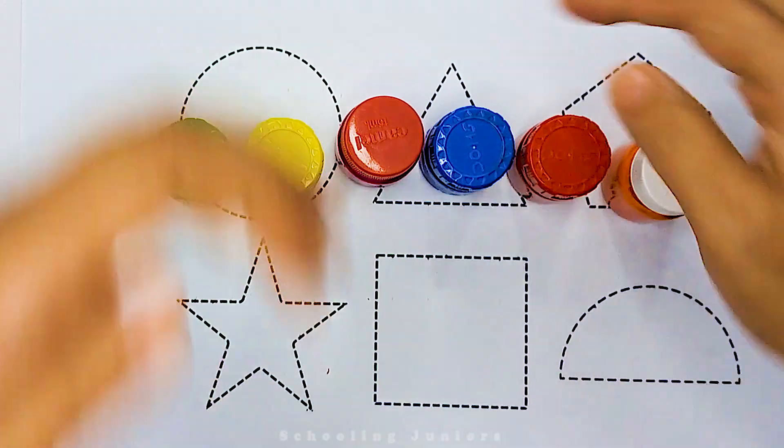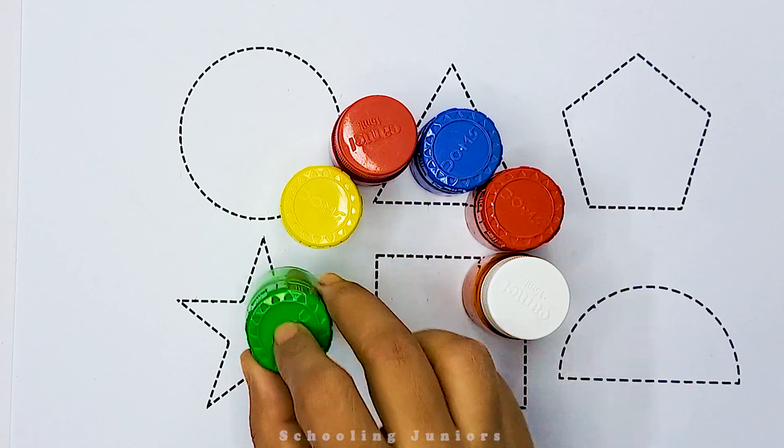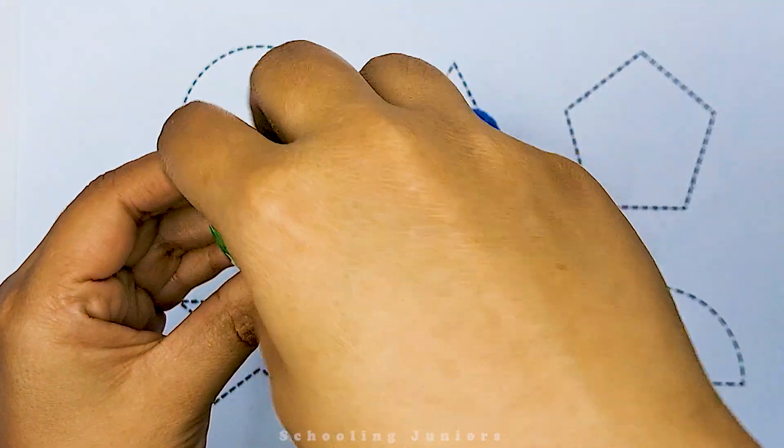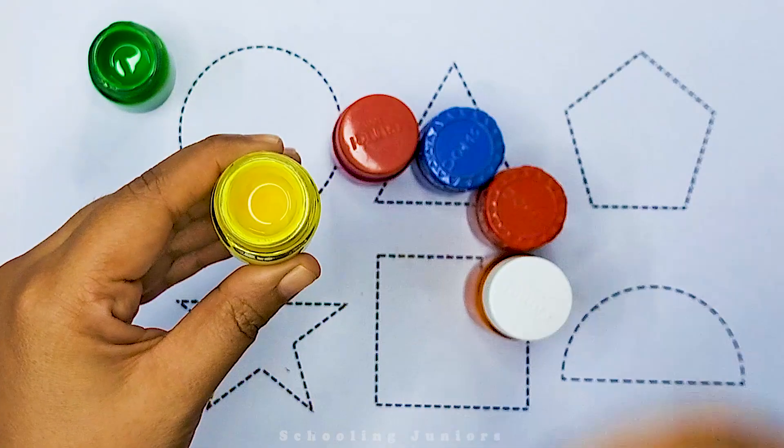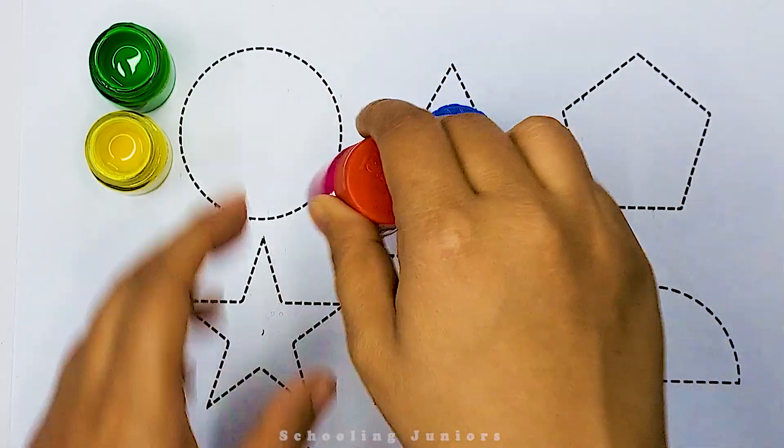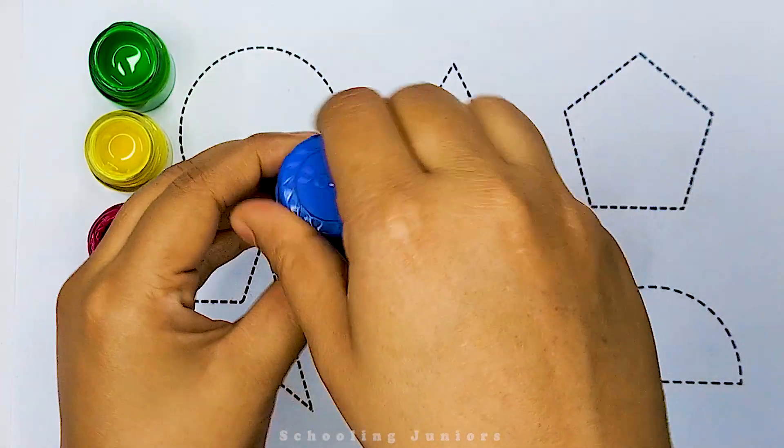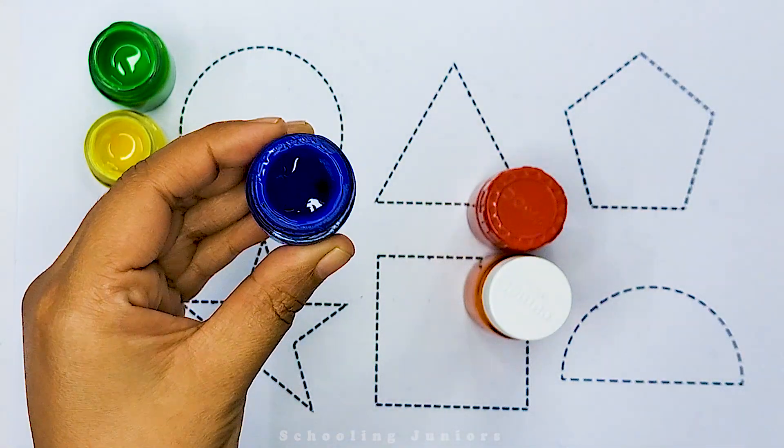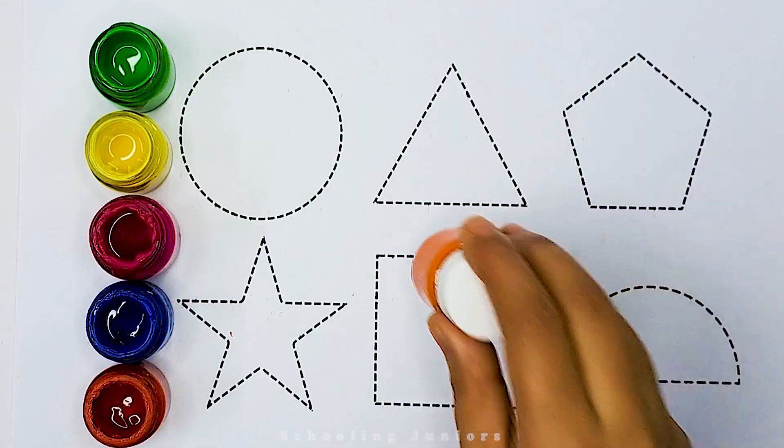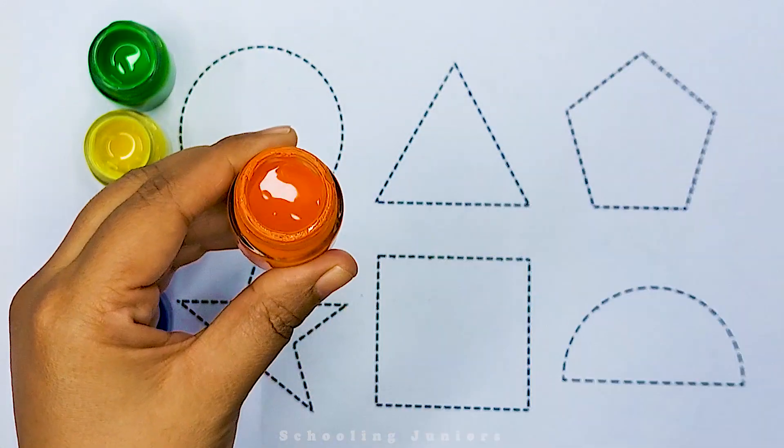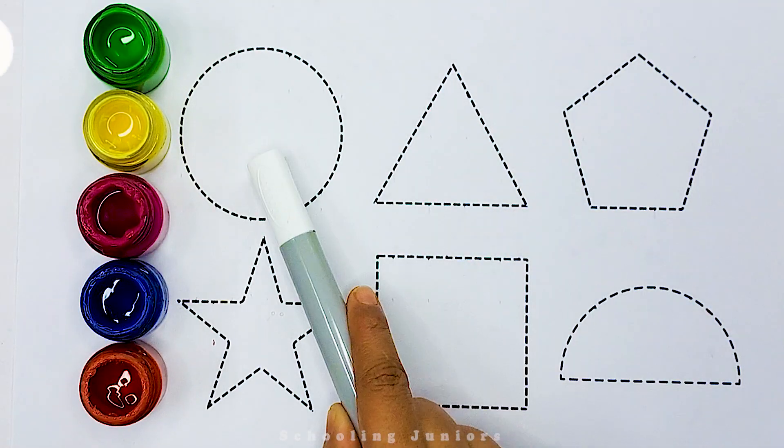So let's get started. These are our lovely colors. This is green color. This is yellow color. This is pink color. This is blue color. This is red color. This is orange color. Now let's learn to draw some 2D shapes.